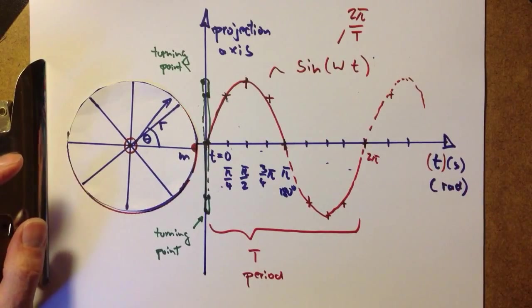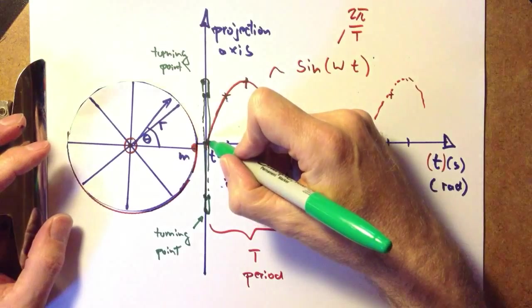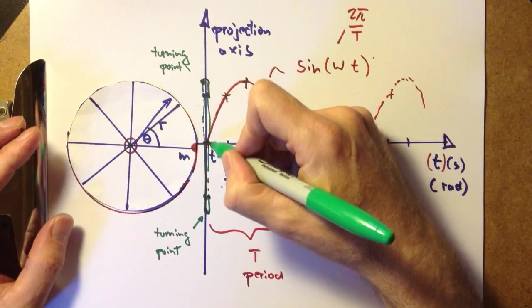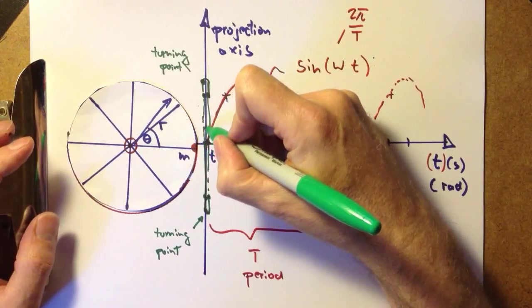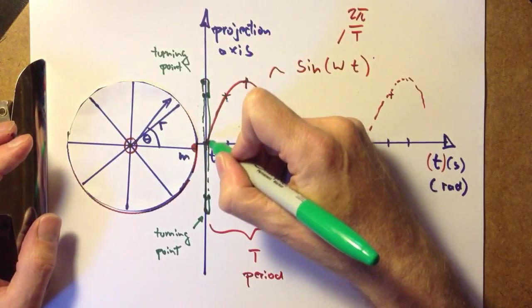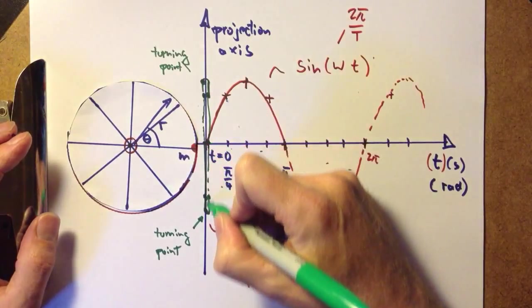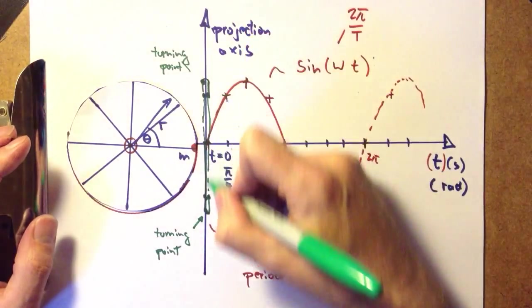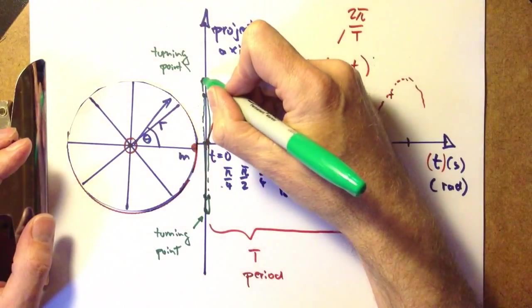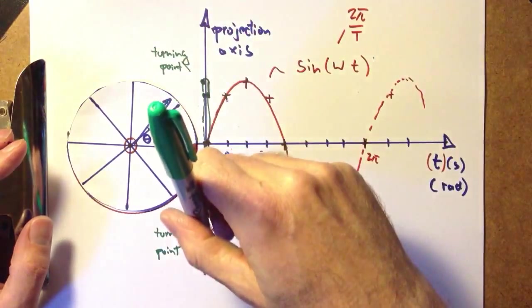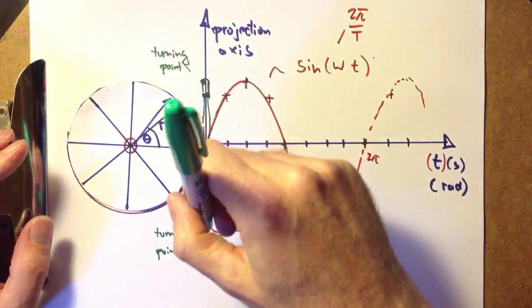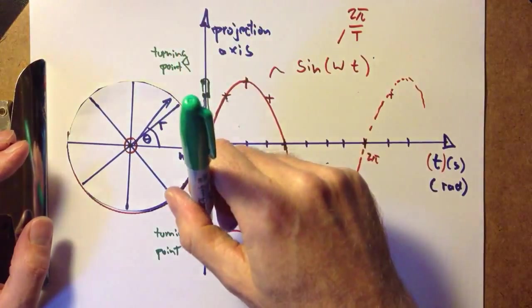Now if we look at the projection of the point mass onto the projection axis, we can see that it first went up, then again through the zero position down and up and down and up. And we see that this is in fact the motion of a simple pendulum. In fact, it's the motion of any kind of oscillator.